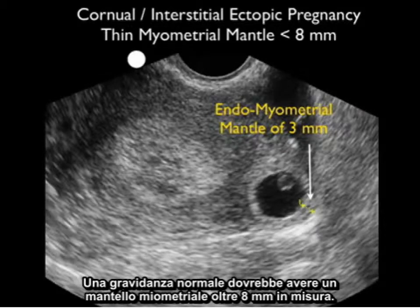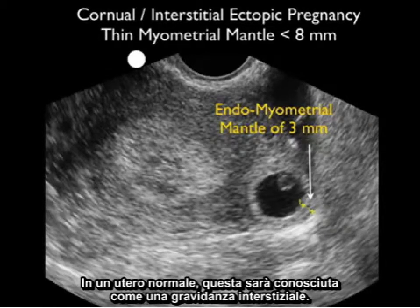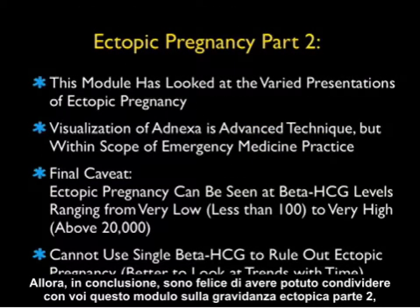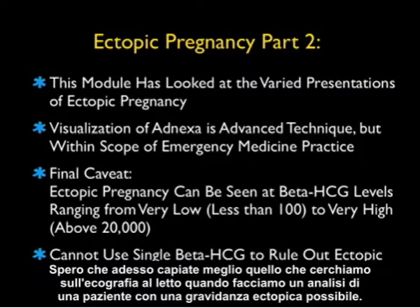A normal pregnancy should have a myometrial mantle greater than eight millimeters. In this bicornuate uterus, this is a corneal pregnancy; in a normal uterus it would be known as an interstitial pregnancy. In conclusion, this module on ectopic pregnancy part two has covered the varied presentations of ectopic pregnancy. Hopefully you now better understand what we're searching for on bedside sonography when working up a patient with possible ectopic pregnancy.